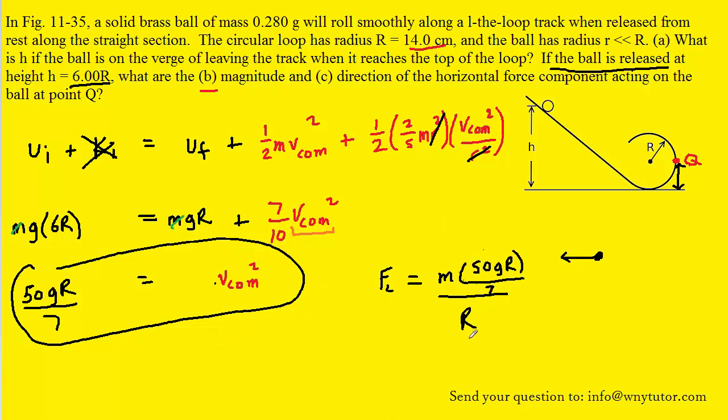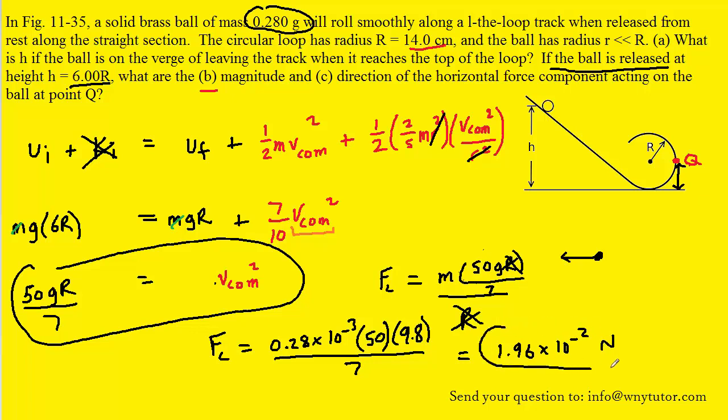And then when you plug in the known values for the mass and the gravitational constant, the R should actually cancel here. And remember the mass was stated up here. Make sure you convert that into kilograms though by multiplying that by ten to the minus three. And you should get 1.96 times ten to the minus two newtons as the answer. And as noted, the direction of that force will be pointing towards the left since the centripetal force must always point towards the center of the circle.